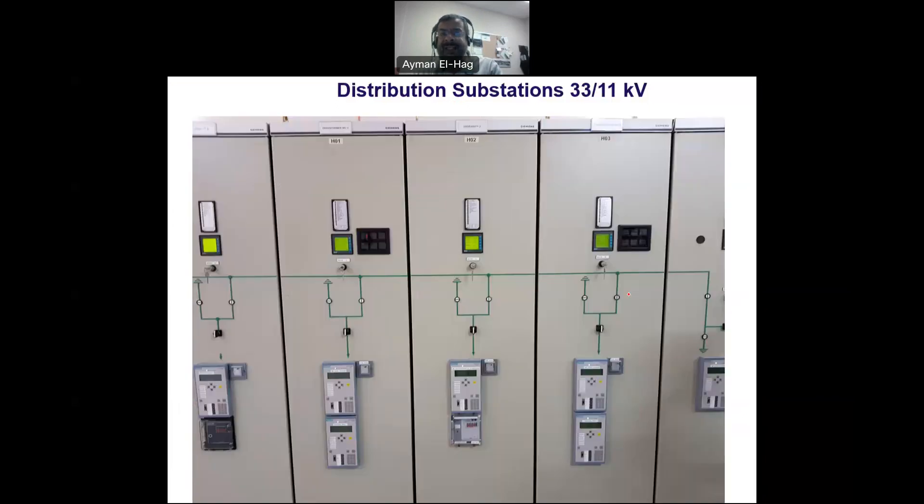This is how they look like. This is the 11 kilovolt bus, and these are the outgoings. The grounding is off, and it's connected to supply the load. If you want to do any maintenance here, we disconnect that part and we ground it. We make it connected to the ground.